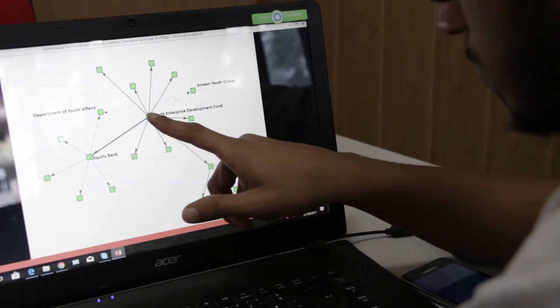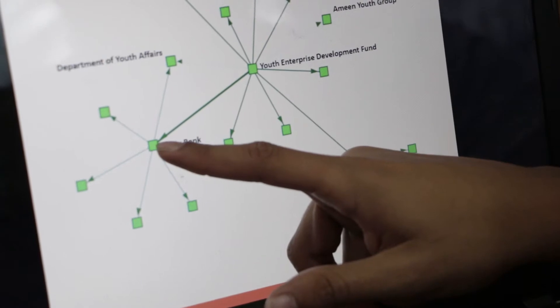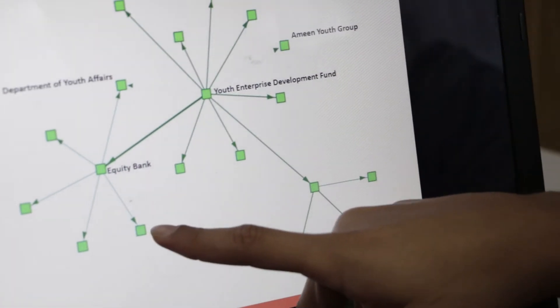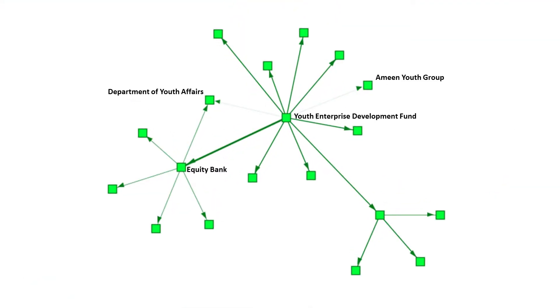Once participants submit actors, they will be redirected to the existing system map and can explore the relationships they just mapped. Let's look at an example together.